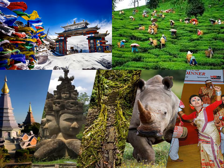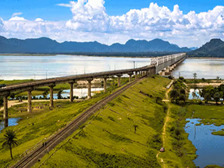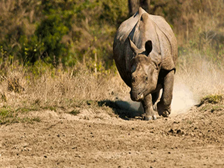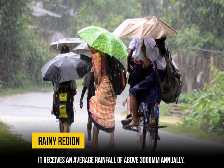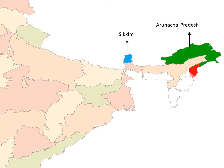They are similar yet different. The states are hilly, but some of them also have plains, while some states have mountainous regions. All these states get heavy rain. We will start our journey with Sikkim, then move towards Arunachal Pradesh, then to Nagaland, then Manipur, Mizoram, Tripura, and finally to Meghalaya.